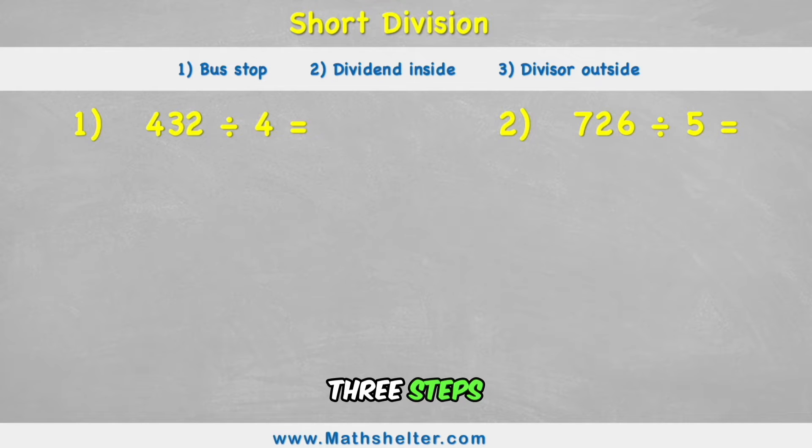So with short division we have these three steps. We're going to first set up our bus stop, then we're going to remember to put our dividend inside and our divisor outside.